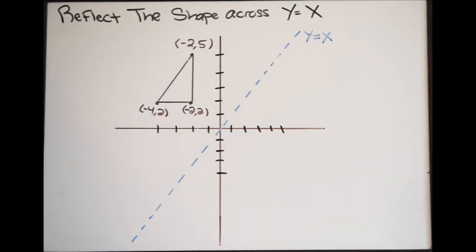In this video we're being asked to reflect the shape across the line y equals x. Notice here that we are provided the coordinates of the vertices of our shape. We already have drawn the line y equals x, that's this dashed line here.